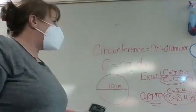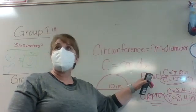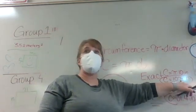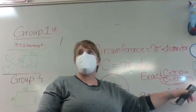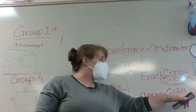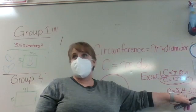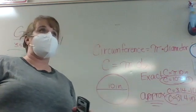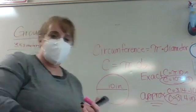So that's why if you want the exact answer, you leave the pi symbol as the pi symbol. If you want the approximate, then what you do is you substitute in pi, round it. Do you guys understand what I just said? Yeah. Okay.